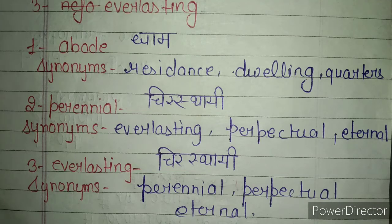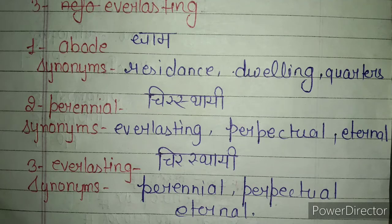The second word is perennial. Perennial का Hindi में मतलब होता है चीरिस्थाई — जो हमेशा रहे उसको कहते हैं चीरिस्थाई। इसके synonyms यूज़ कर सकते हैं: everlasting, perpetual, and eternal.